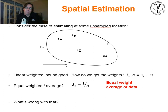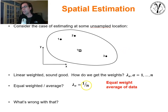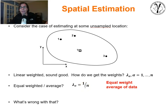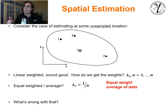Weighting schemes we could propose: equal weighting on all data — the weight equals 1 divided by the number of data. But that would not account for closeness, redundancy, or spatial continuity, so we're going to throw that out.